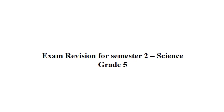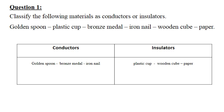This is the exam revision for semester two, science grade five. Question one — let's start with the first one: a golden spoon.